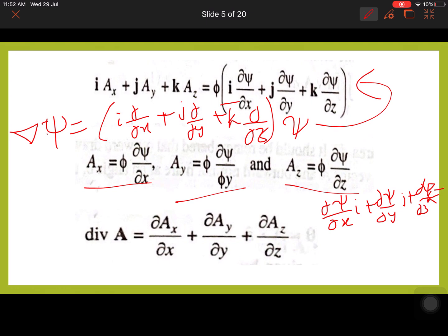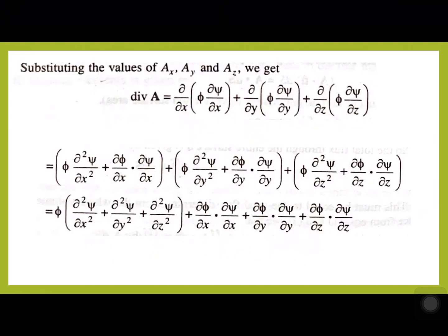Therefore div(A-bar) equals ∂Ax/∂x plus ∂Ay/∂y plus ∂Az/∂z. Substituting the values of Ax, Ay, Az, div(A) equals ∂/∂x(φ ∂ψ/∂x) plus ∂/∂y(φ ∂ψ/∂y) plus ∂/∂z(φ ∂ψ/∂z). Expanding gives: φ ∂²ψ/∂x² plus ∂φ/∂x times ∂ψ/∂x, plus φ ∂²ψ/∂y² plus ∂φ/∂y times ∂ψ/∂y, plus φ ∂²ψ/∂z² plus ∂φ/∂z times ∂ψ/∂z.